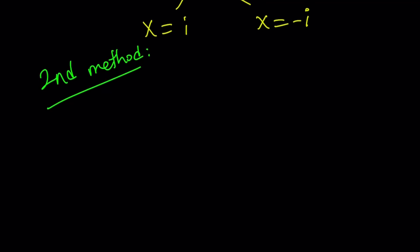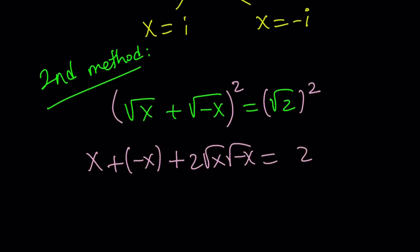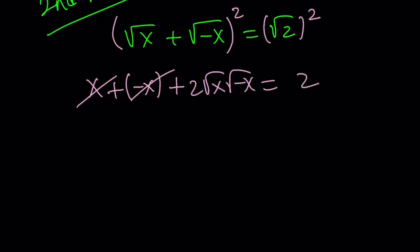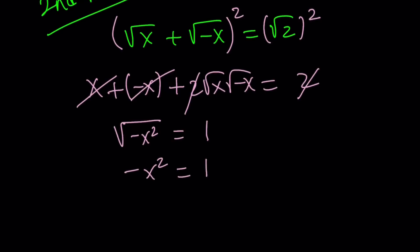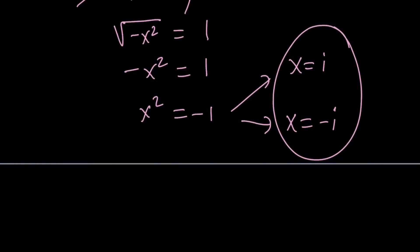For the second method, instead of isolating radicals, let's square both sides directly. Squaring (a + b) gives a squared plus b squared plus 2ab equals 2. The x and negative x cancel out, and we're left with 2 times the square root of x times square root of negative x equals 2, giving us the square root of negative x squared equals 1. Squaring both sides again gives x squared equals negative 1, and we end up with the same results: x equals i and x equals negative i.